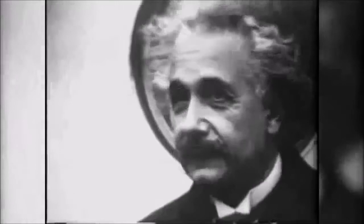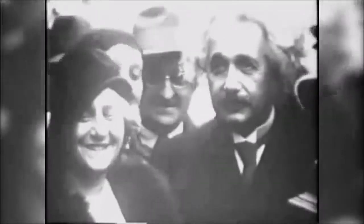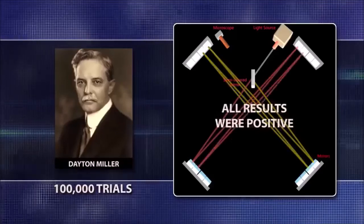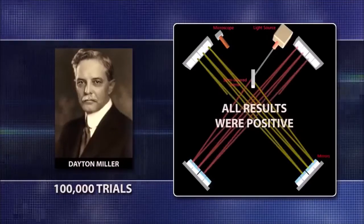Einstein was so bothered by this fact that he hired what can be called a scientific hitman, Robert Shankland, to seek to discredit the experiments, especially the most comprehensive interferometer experiments performed by Dayton Miller between 1908 and 1921.